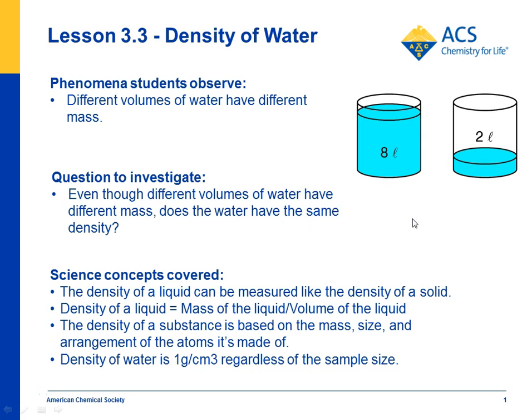In lesson 3.3, a student volunteer picks up two buckets, one with a lot of water and one with a little water. This has 8 liters and 2 liters. It really doesn't matter, just so long as one has much more than the other.